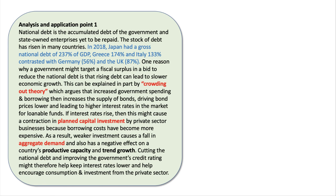So please do stay with me as we go through a commentary on how to write an answer on this question — the question about governments deciding deliberately, as part of their fiscal policy, to reduce their national debt. In the video we're going to look at two points of analysis and application, then two evaluation points, and then come to a final conclusion. Here's my first paragraph. National debt is the accumulated debt of the government — in other words, it's the amount of debt that has been built up over time and yet to be repaid.